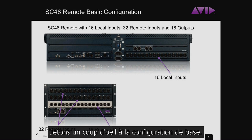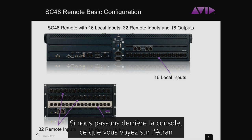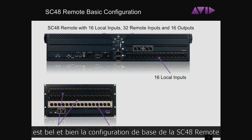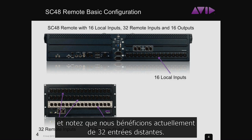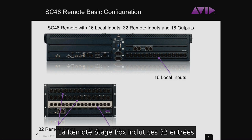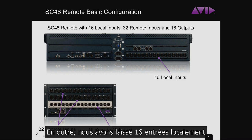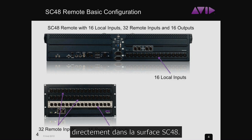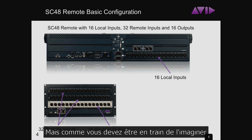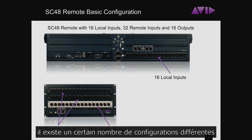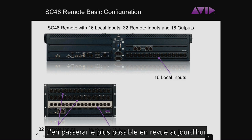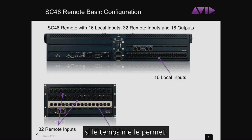Let's take a look at the basic configuration. If we scoot around behind the console, what you see on screen is really the basic configuration of SC48 Remote. We've got 32 remote inputs — the remote stage box carries 32 of those inputs — and we also have 16 outputs located in the Stage 48, plus 16 inputs located locally in the SC48 control surface. There are a number of different configurations possible with this system.